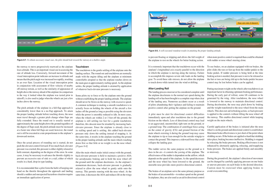The landing process must never be considered complete until the airplane decelerates to the normal taxi speed during the landing roll or has been brought to a complete stop when clear of the landing area. Numerous accidents occur as a result of pilots abandoning their vigilance and failing to maintain positive control after getting the airplane on the ground. A pilot must be alert for directional control difficulties immediately upon and after touchdown due to ground friction on the wheels. Loss of directional control may lead to an aggravated, uncontrolled tight turn on the ground, or a ground loop. The combination of centrifugal force acting on the center of gravity (CG) and ground friction of the main wheels may cause the airplane to tip enough for the outside wing tip to contact the ground, imposing a sideward force that could collapse the landing gear.